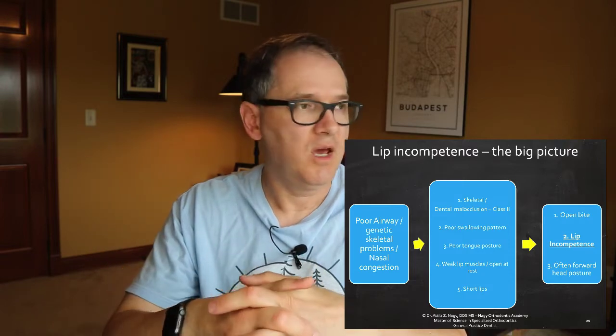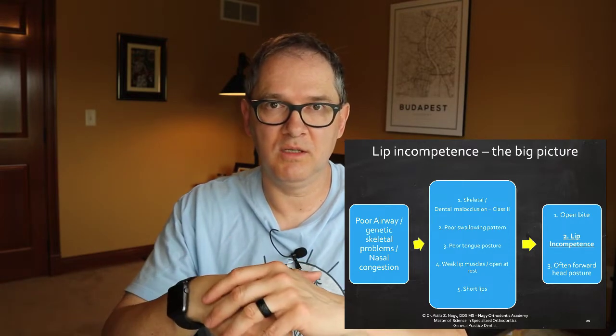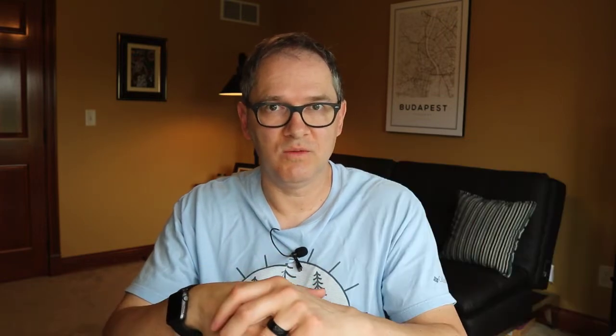They have this low and forward tongue posture when they swallow, so instead of resting behind the front teeth and flat against the palate, their tongue is just forward all the time between the teeth because of the open bite. They also have an altered resting tongue posture. When you look at people with a normal resting tongue, the tongue is against the roof of the mouth, behind the front teeth, flat against the palate — that's how they rest as well as swallow.